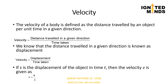Non-uniform speed: suppose a car travels 5 m in the first second, 10 m in the second second, 7 m in the third second, 9 m in the fourth second, and so on. Here the speed of the car is changing, and this is called non-uniform speed or variable speed.